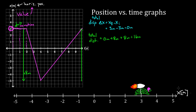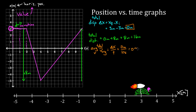We can figure out the average velocity — sometimes written as V with a bar, or V-AVG. Average velocity is displacement per time. The total displacement was zero, divided by ten seconds, so the total average velocity equals zero. The average velocity for the entire trip was zero because the turtle had no total displacement.